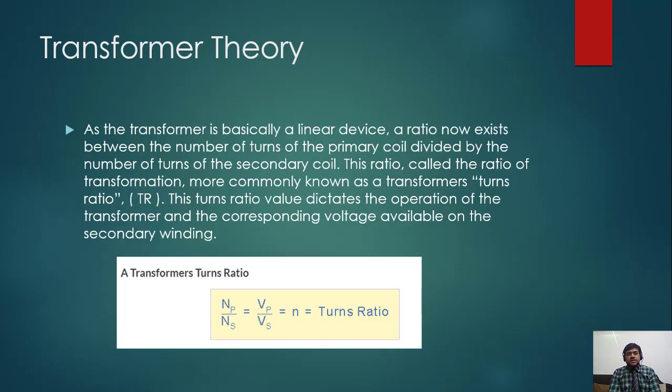As the transformer is basically a linear device, a ratio now exists between the number of turns of the primary coil divided by the number of turns of the secondary coil. This ratio is called the turns ratio of the transformer, more commonly the transformer's turn ratio (TR). This turns ratio value dictates the operation of the transformer and the corresponding voltage available on the secondary winding.